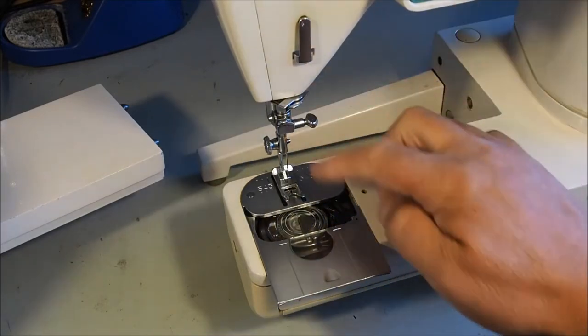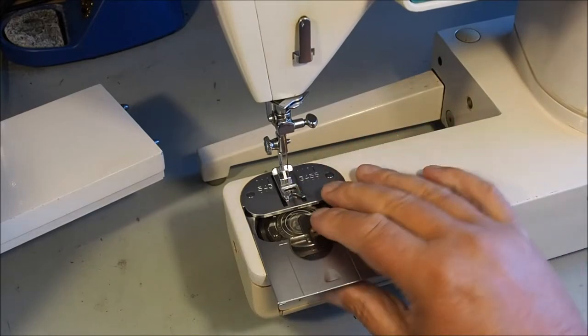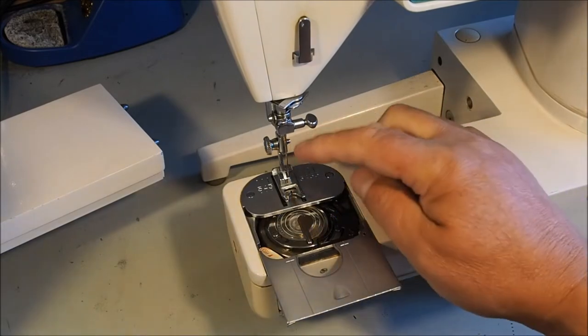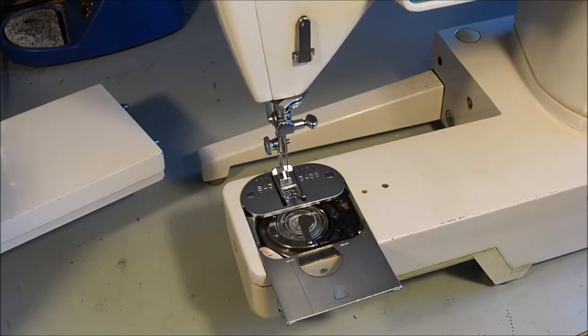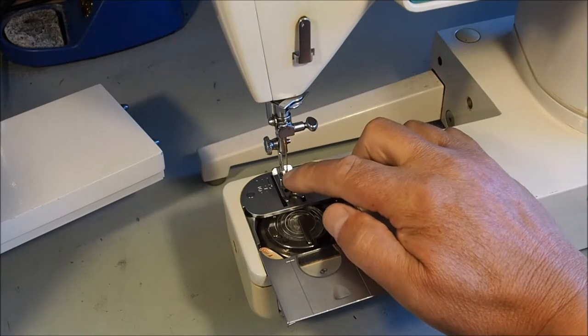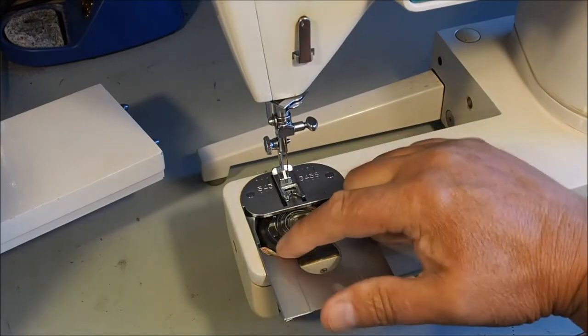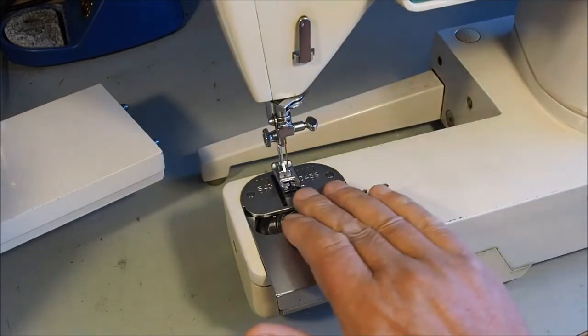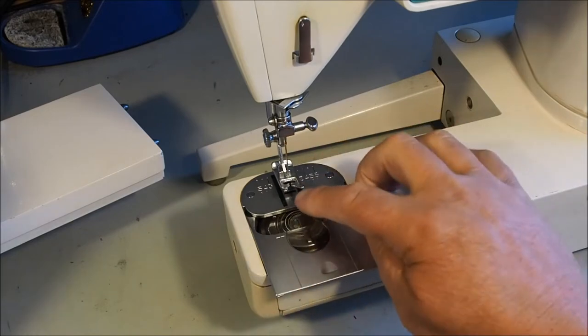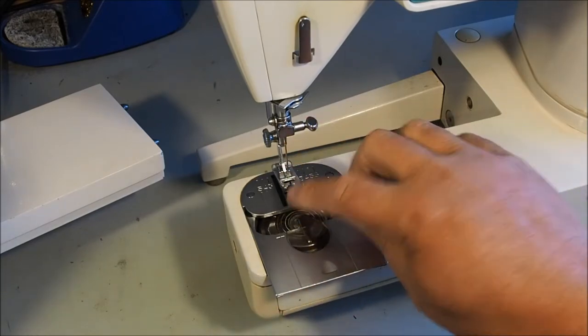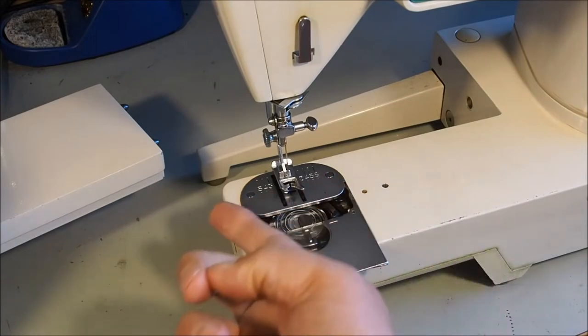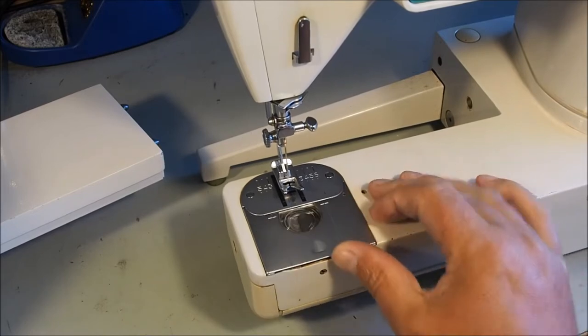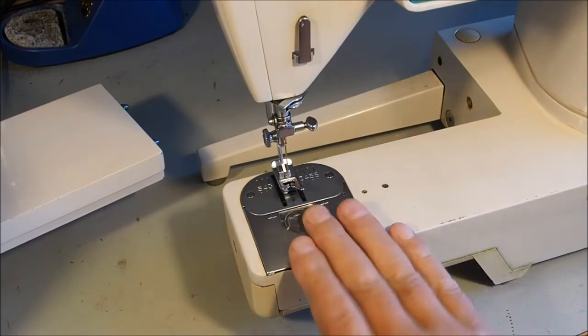You leave the needle threaded, pull this back, and engage the bobbin winding mechanism. It winds the bobbin while the needle's threaded. When you finish, push the plate in to disengage this lever. The bobbin thread and needle thread are still one at this stage - just grab that thread and cut it, and you're ready to go. Very nice design and a big selling feature.